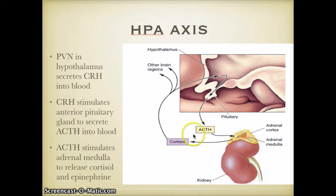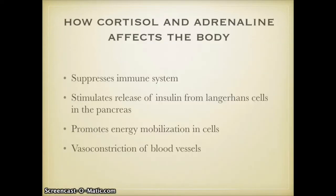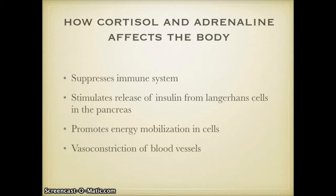When cortisol is under stress, it helps reduce the amount of stress already being undergone. When cortisol and adrenaline are in your blood, cortisol inhibits and suppresses your immune system, so less energy goes to your immune system. Cortisol also floats in your blood to your pancreas, where it stimulates Langerhans cells — the cells that produce insulin — to release more insulin into the blood. It also stimulates cells to produce more energy and is responsible for the vasoconstriction of the blood vessels.